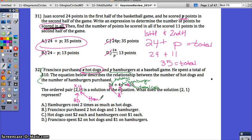Let's read the options. Hamburgers cost two times as much as hot dogs—well, X is the number of hot dogs and Y is the number of hamburgers, so that has nothing to do with the cost. What about B? Francisco purchased two hot dogs and one hamburger. That sounds pretty good actually. If you plug those in, 2 times 3 is 6, 1 times 4 is 4. Six plus four does give me $10, so B sounds pretty good.